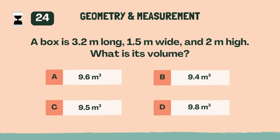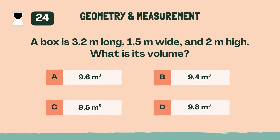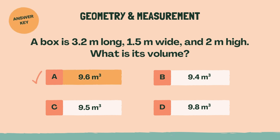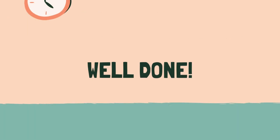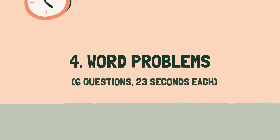A box is 3.2 meters long, 1.5 meters wide, and 2 meters high. What is its volume? The answer is A, 9.6 cubic meters. Well done — last category coming up. Category 4: Word Problems.